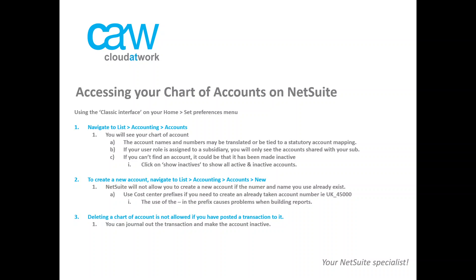To create a new account, you can go to Lists > Accounting > Accounts > New. There you can put your account number, the account name, the account type, and if it's an opening balance account, you can put the balance right there. If you already saved the account and forgot to put the balances, that's okay — you can do a journal entry and enter the opening balances through journal entries.